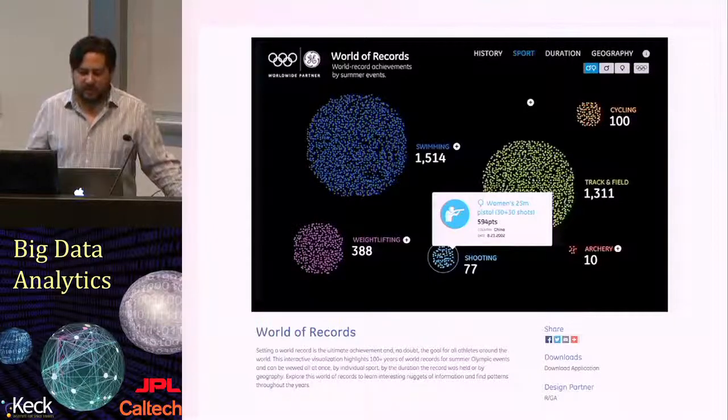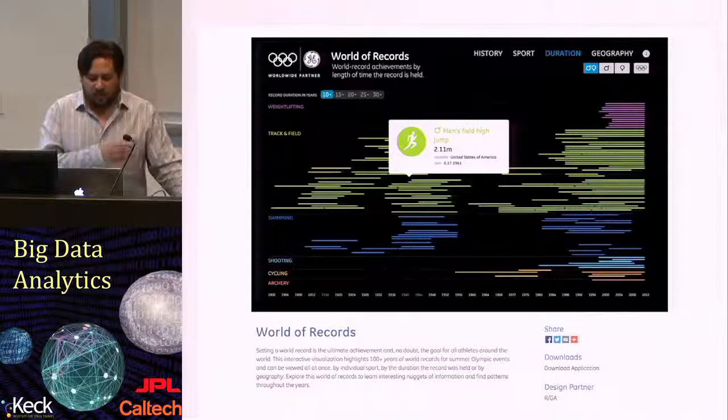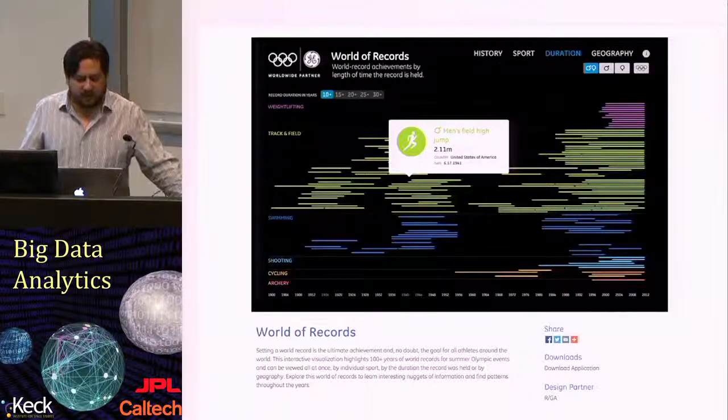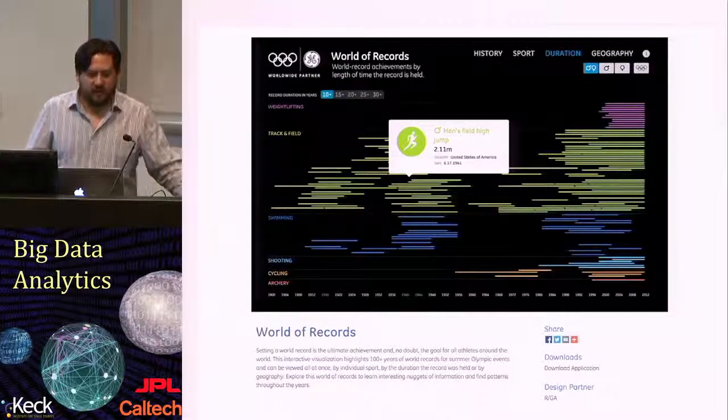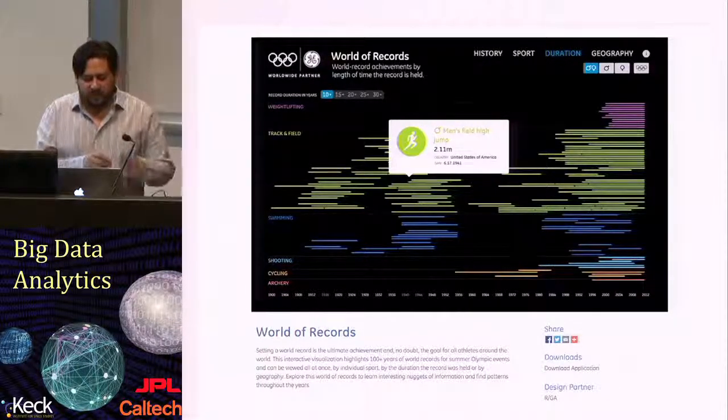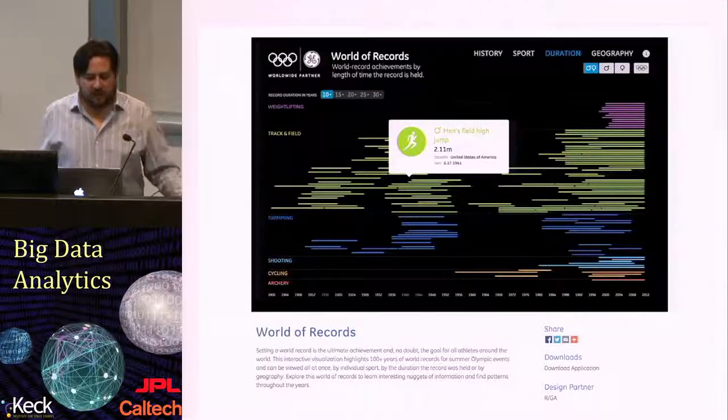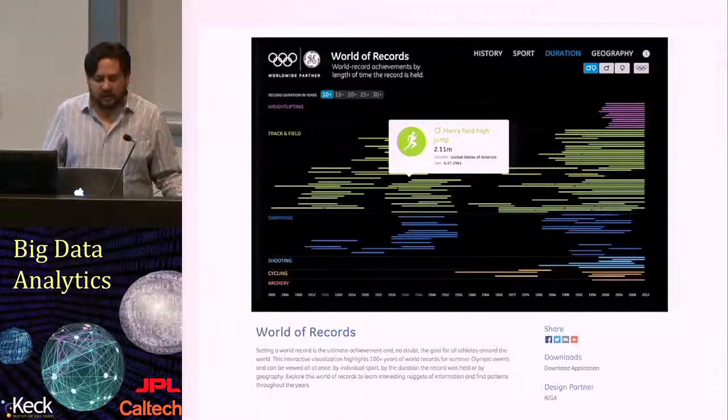For in this case you just create clusters of the different points being represented and now you can make a different conclusion about the number of records in swimming versus the number of records in cycling for instance. You can do one more change and change the position and even change the visual composition of it to actually create how long a record has stood for. So you're adding an element of time and duration by simply creating a different representation rather than a dot actually elongating it and showing it how long it lasted in the excess of time.